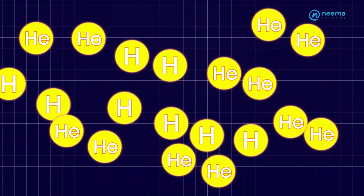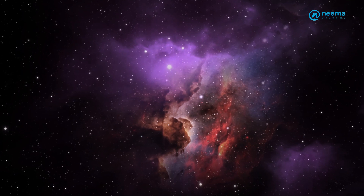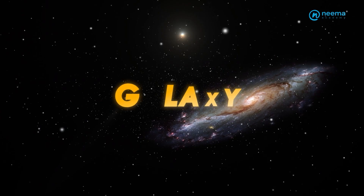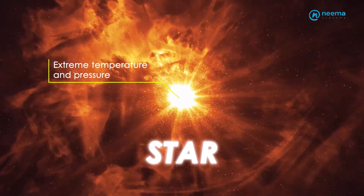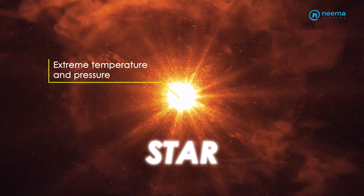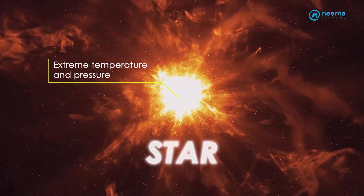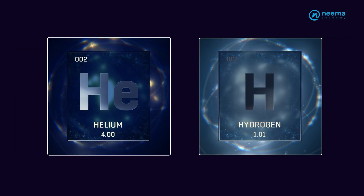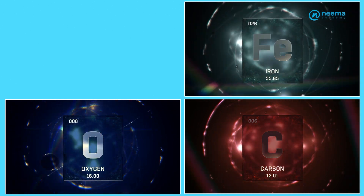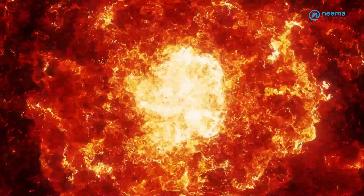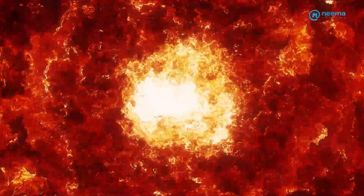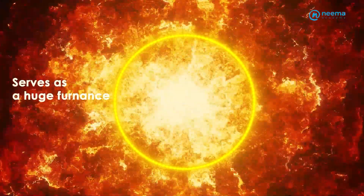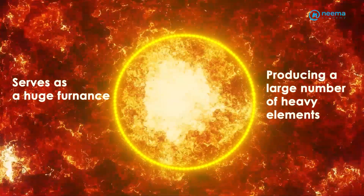These elements accumulated and formed a dense mass called a nebula, which eventually developed into a galaxy, followed by the formation of stars. The extreme temperature and pressure present in these stars forced hydrogen to combine to form more helium. Elements beyond helium and hydrogen, including carbon, oxygen, iron, and gold, owe their existence to the fiery hearts of stars. Therefore, the core of a star serves as a huge furnace, producing a large number of heavy elements.